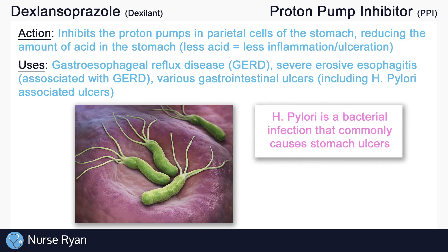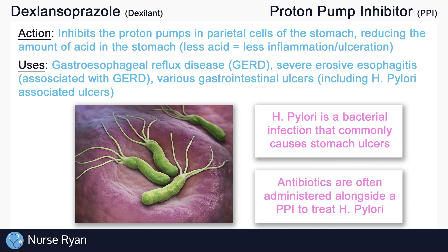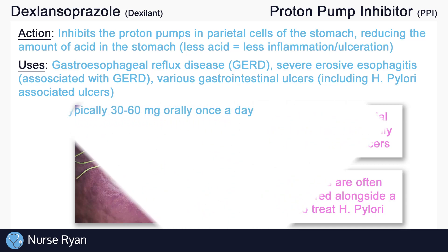H. pylori is a bacterial infection that commonly causes stomach ulcers. Dexilant won't actually treat the infection, but rather treat some of the symptoms of the infection, such as the ulcers or heartburn, simply by reducing stomach acid. Antibiotics are often administered alongside a proton pump inhibitor to actually treat the H. pylori infection.